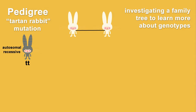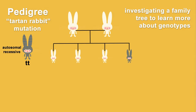Let's look at the first generation of rabbits born to this couple. We see that they have four babies and one of them is tartan. That confirms three things: one, the tartan baby must be homozygous for the small t allele; two, the parents must be heterozygous, because the tartan baby would not be possible if each parent did not have a recessive allele to pass down; and three, the three other rabbits must be either homozygous dominant or heterozygous, but we can't be absolutely sure which.